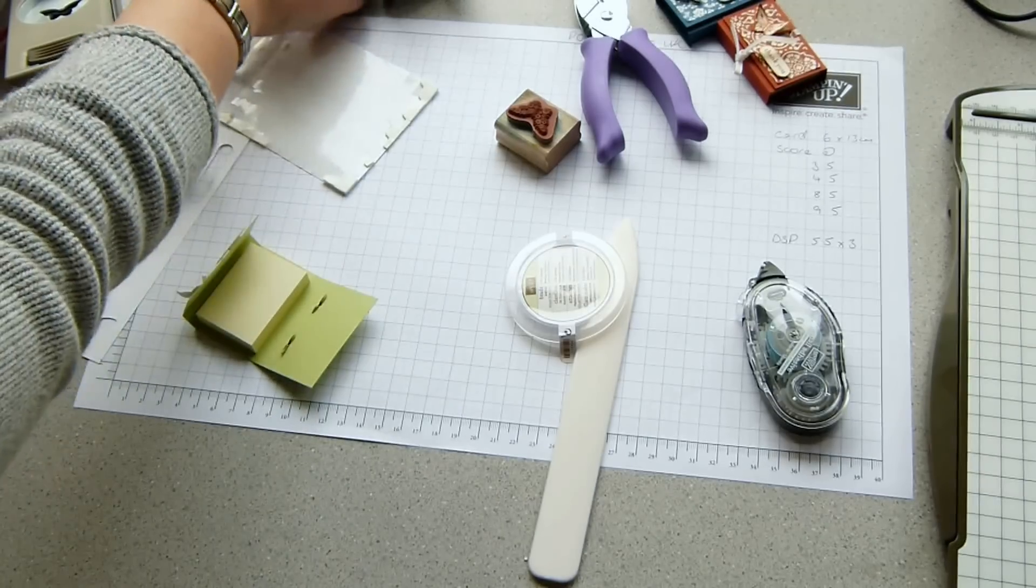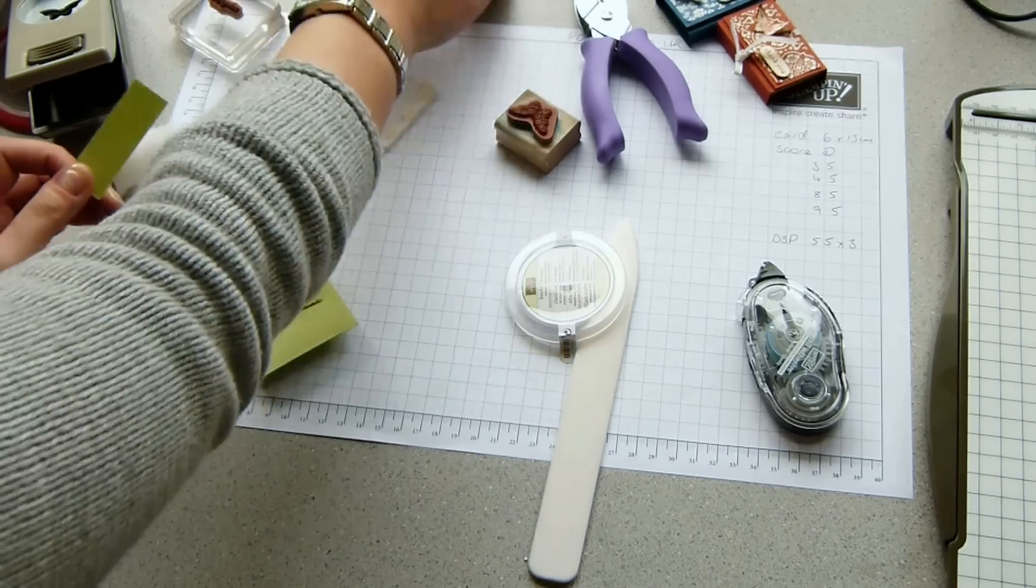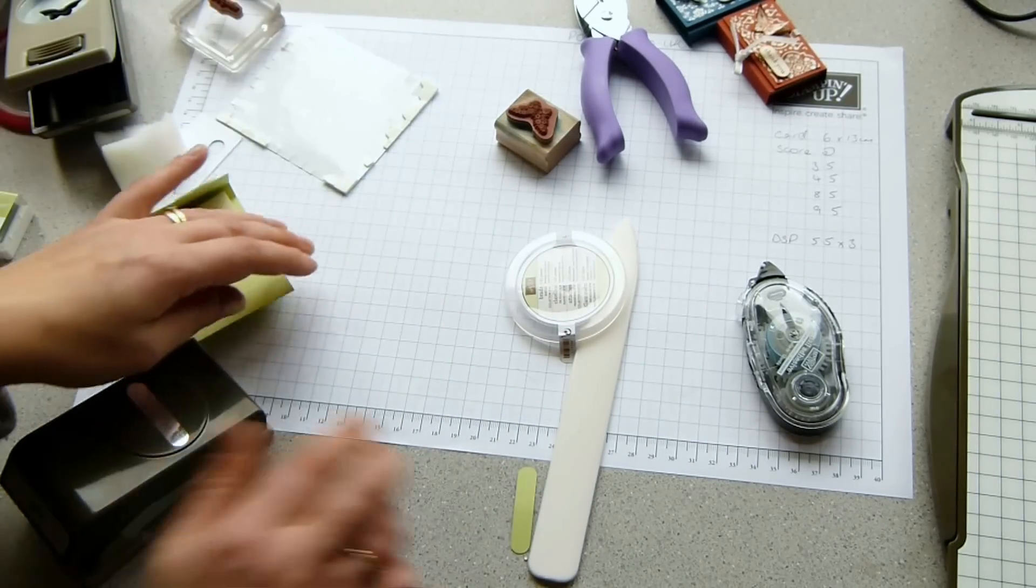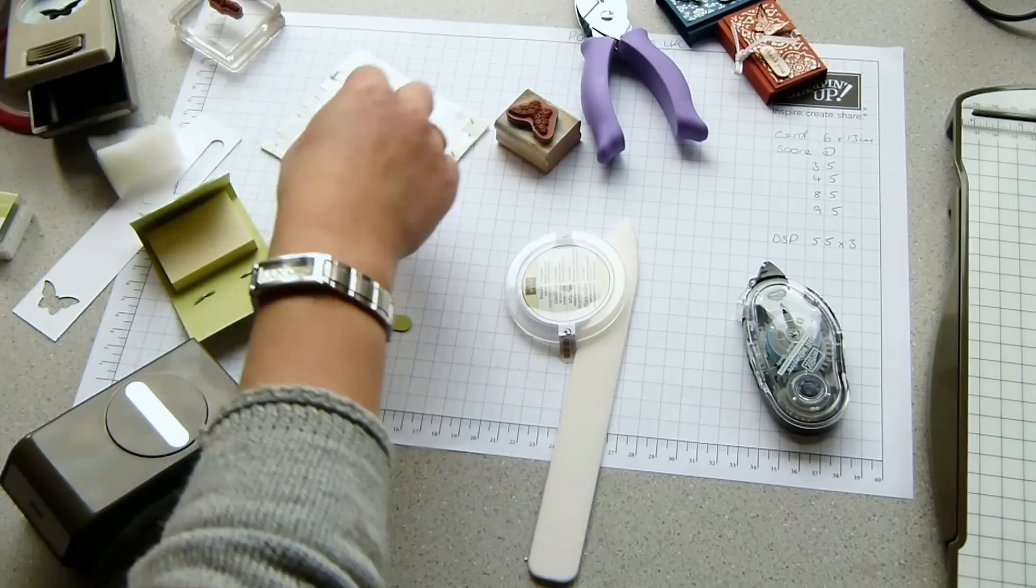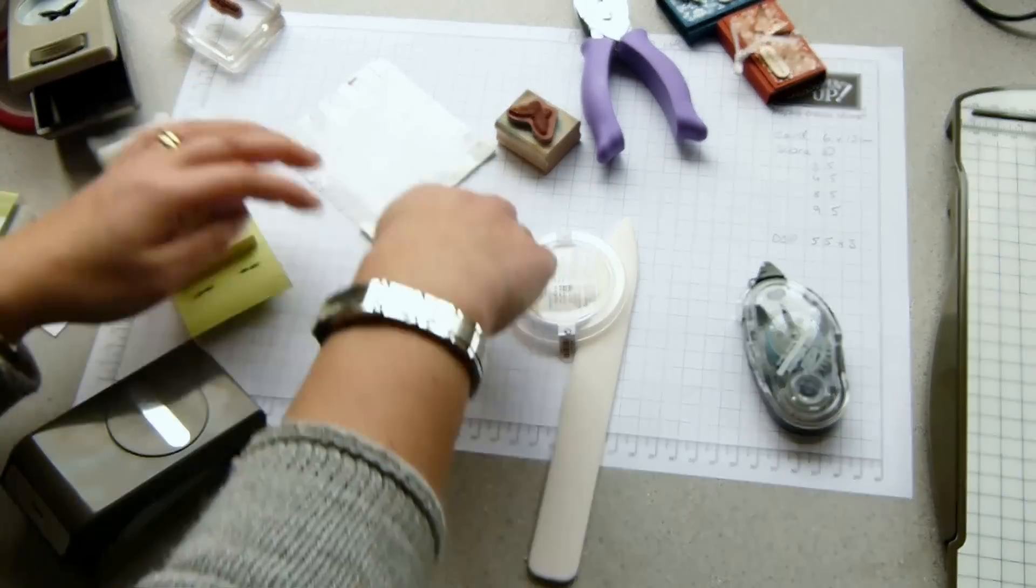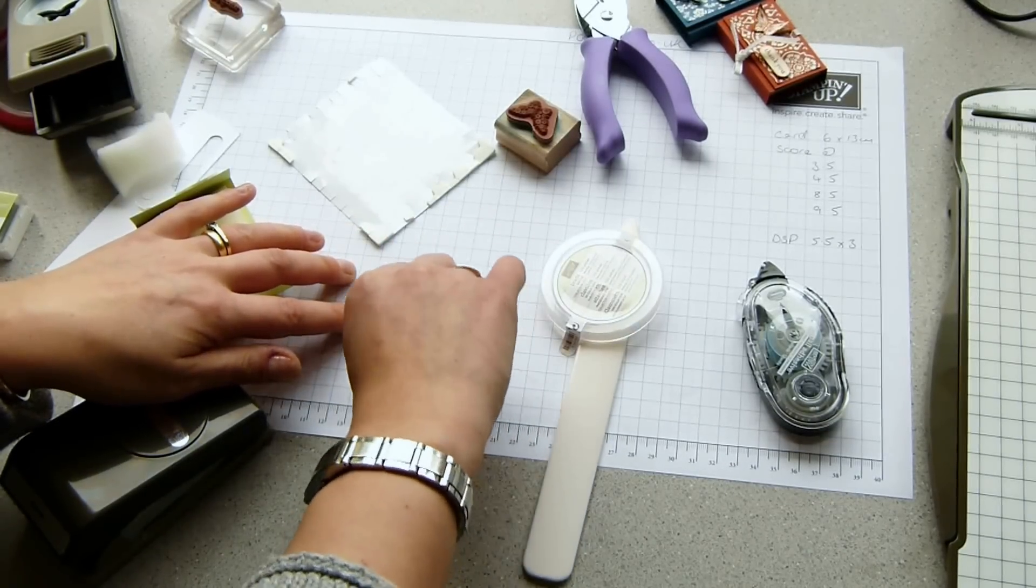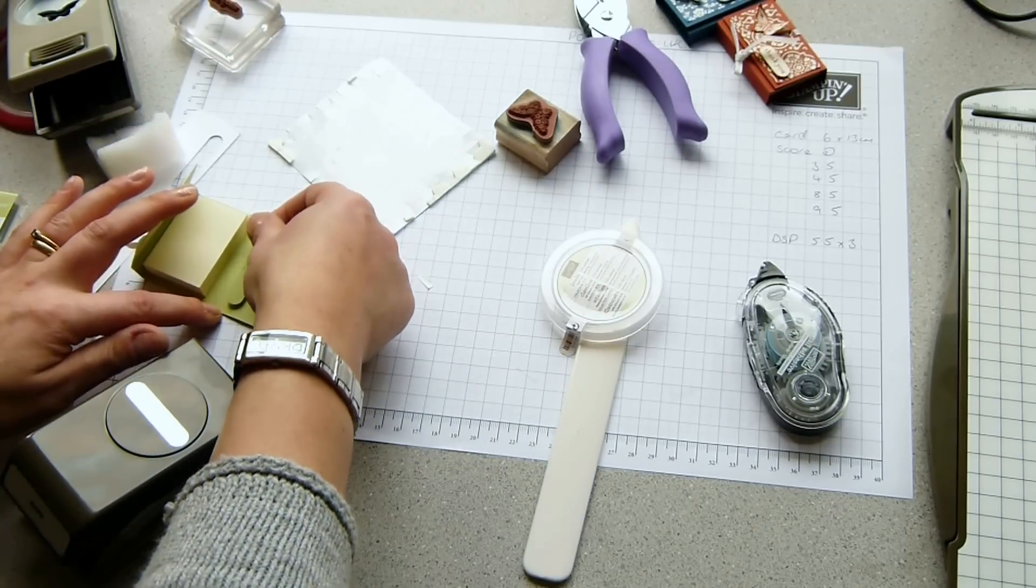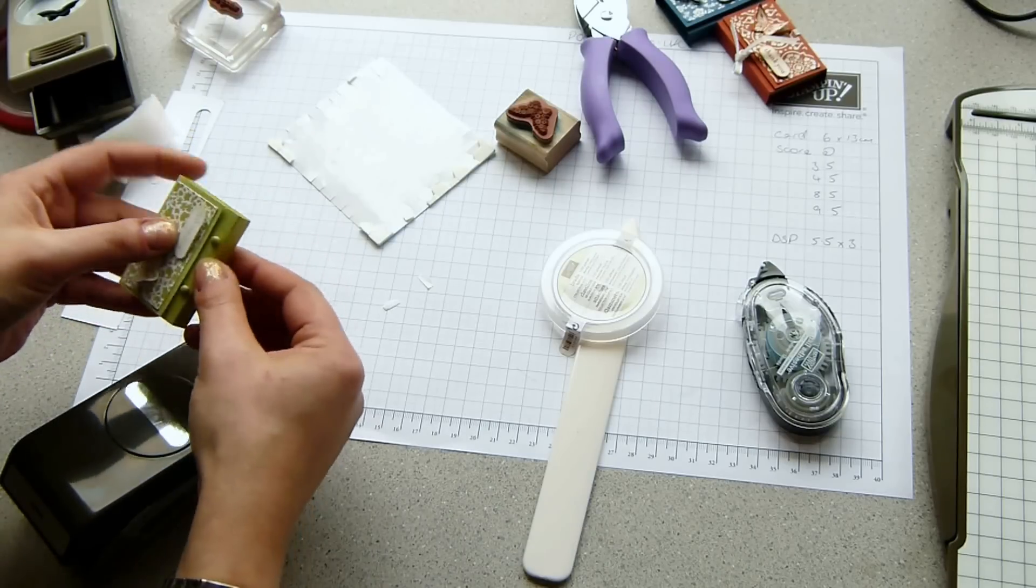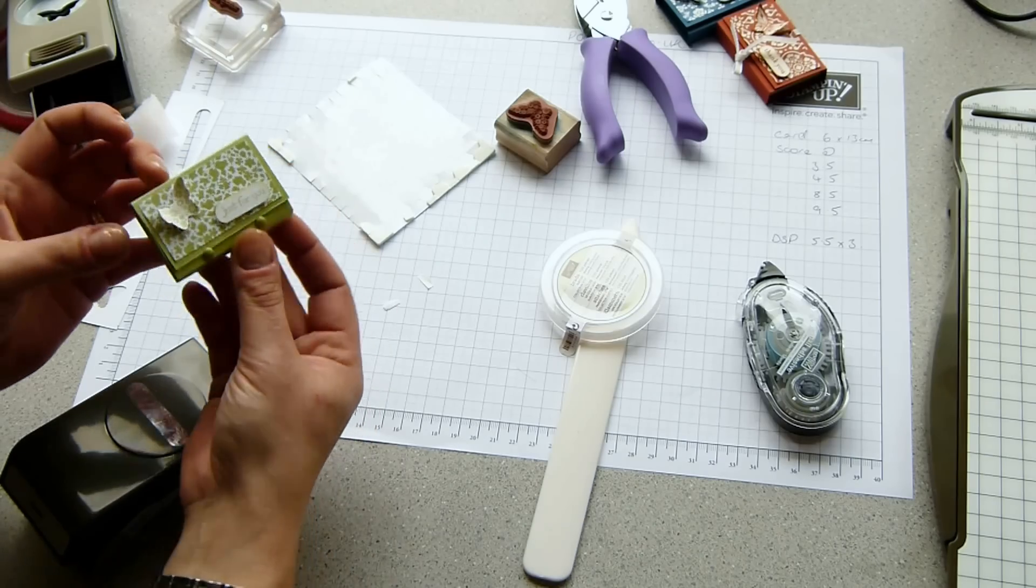Obviously we've got this bit on here, which is not the most attractive thing in the world. So with the word window again, and this is a bit of Certainly Celery cardstock, I'm just going to pop out another one. Stick some dimensionals on it. And those are just going to go over really to protect it and to keep it down more than anything. Close it up. Slide them underneath. And that's it.